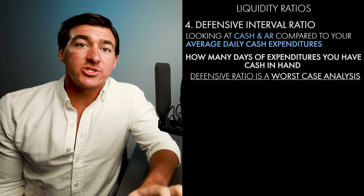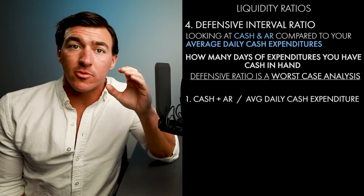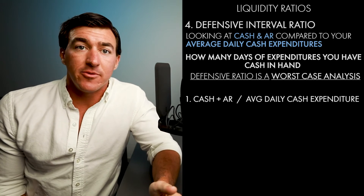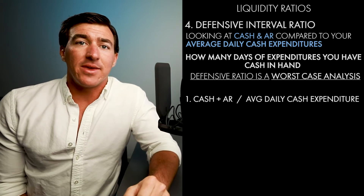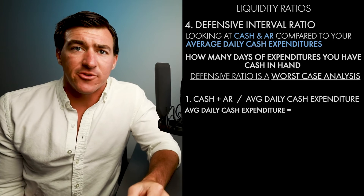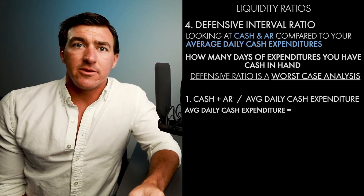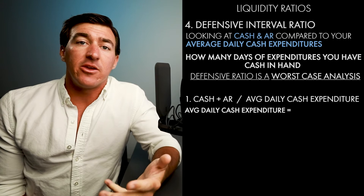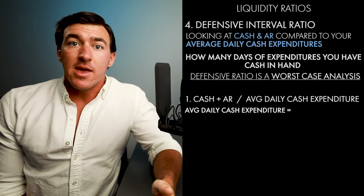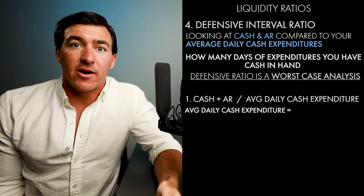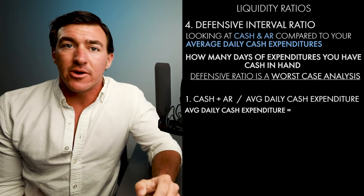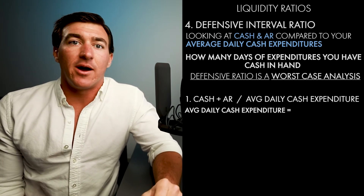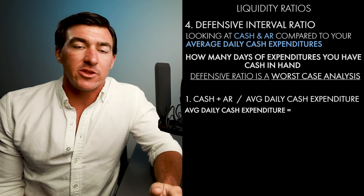The numerator is cash plus accounts receivables — relatively simple. You have your cash account, your accounts receivables, add those up, and you're done. The average daily cash expenditure is a bit different. For example, if you're a manager of a t-shirt shop and you pay your employees $50 a day and utilities average $10 a day, that's $60 — your average daily cash expenditure.